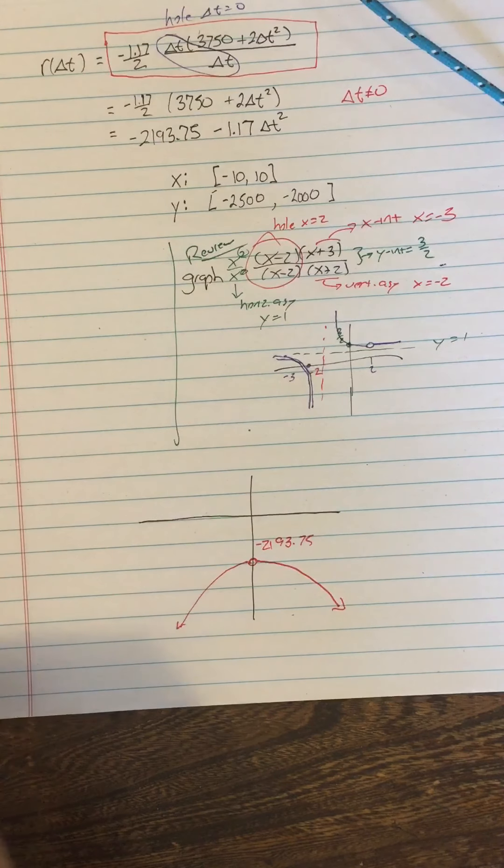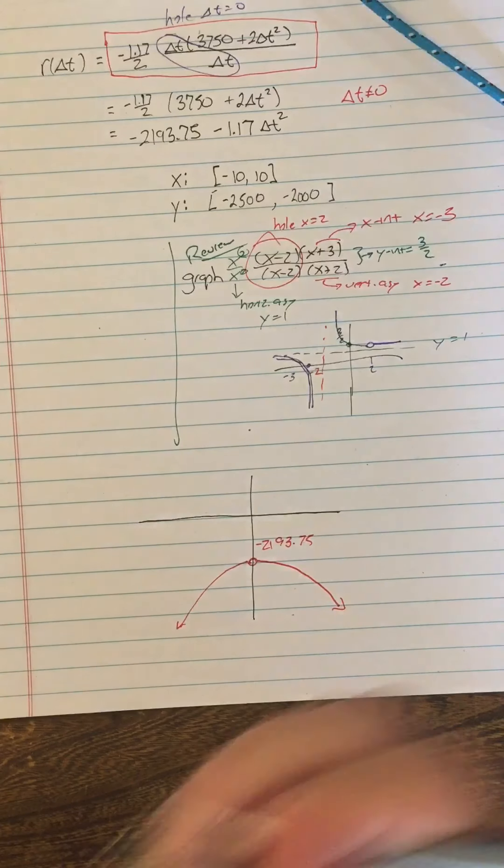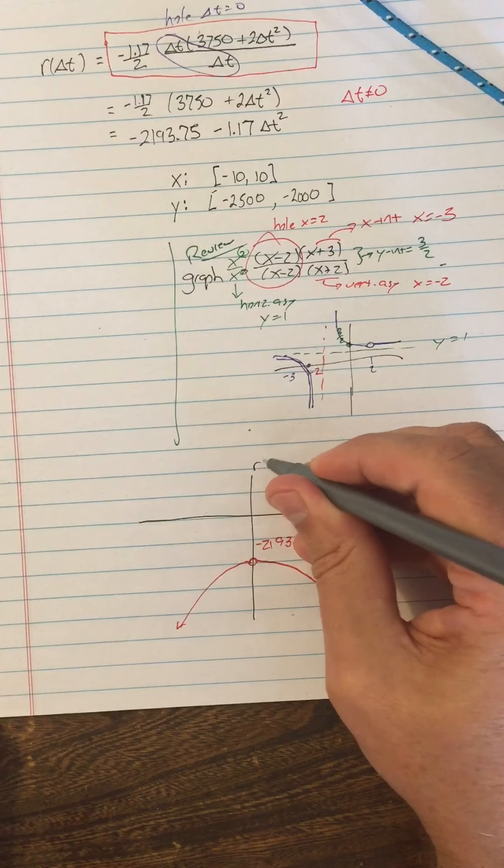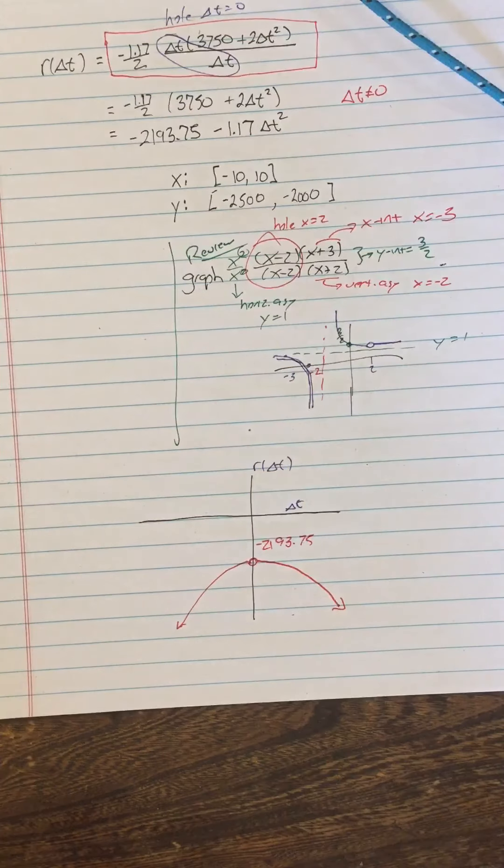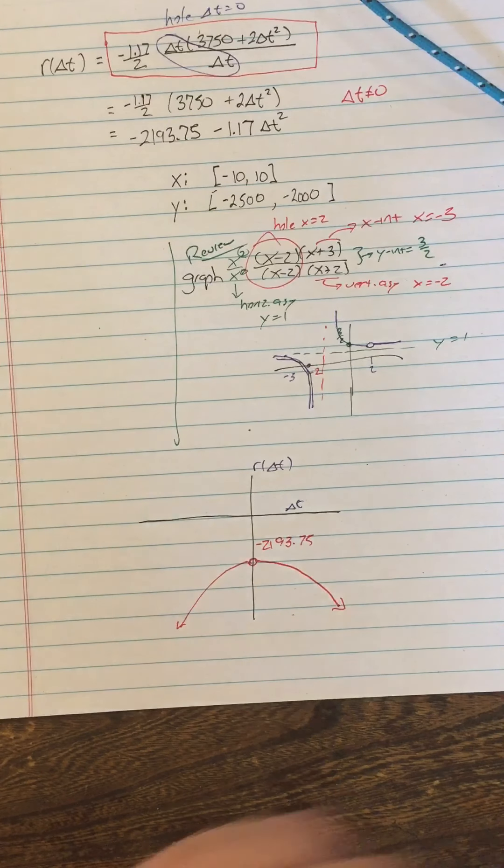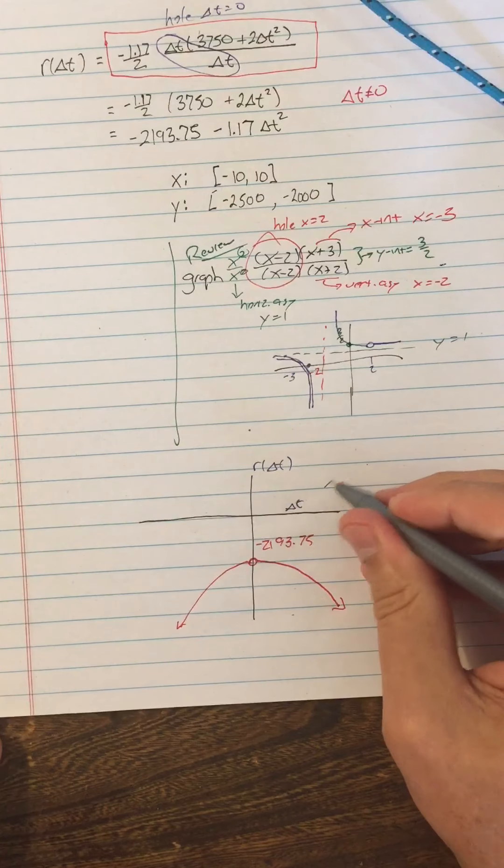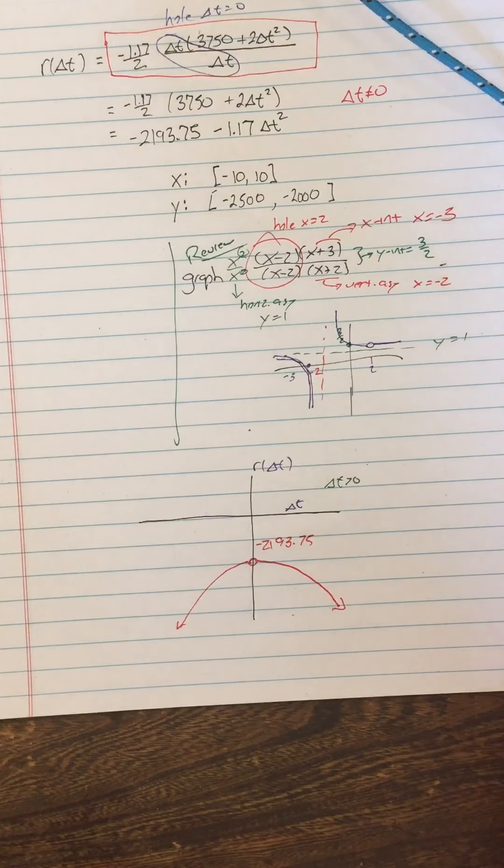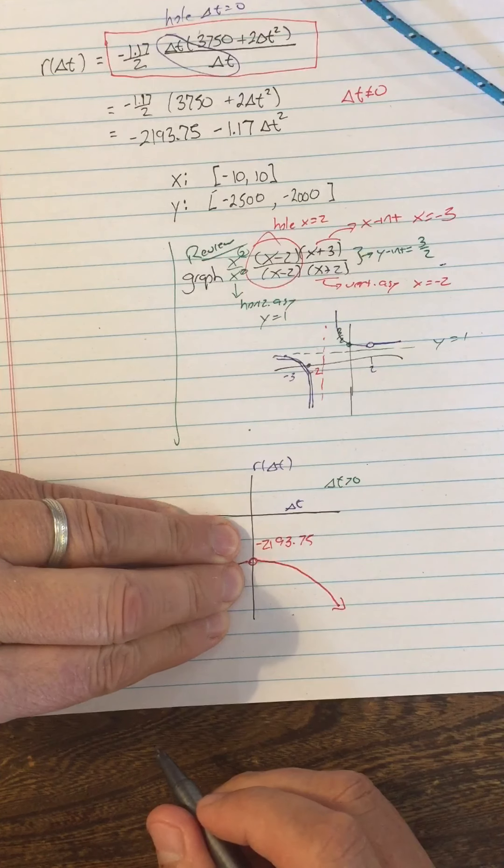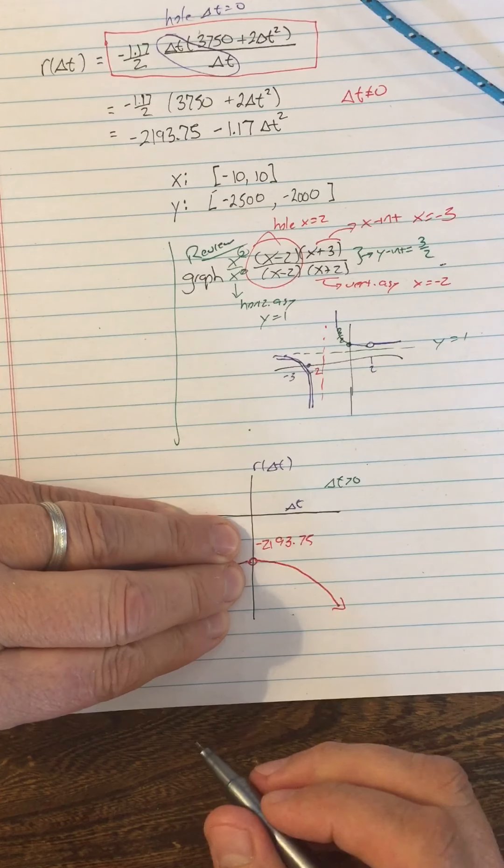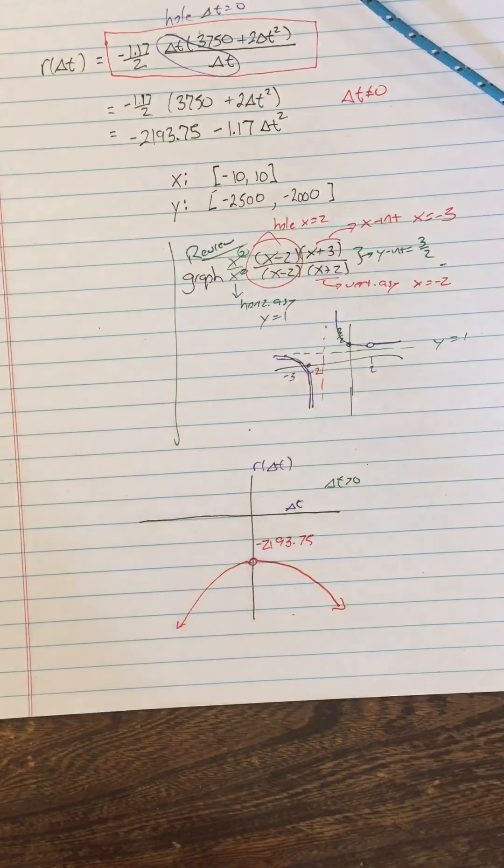All right, other things I wanted to talk about this graph. This is a delta t axis, and this is r of delta t. All right, so we're concerned with delta t greater than zero. That's really the domain of the problem. Therefore, we should ignore the left-hand side of the graph, the negative side, because that's not in the domain of the problem. Delta t has to be positive.